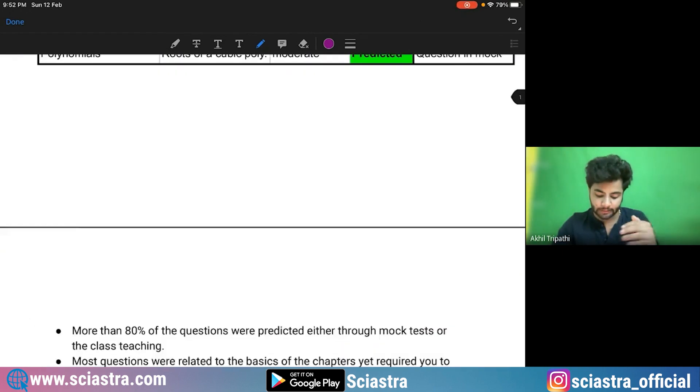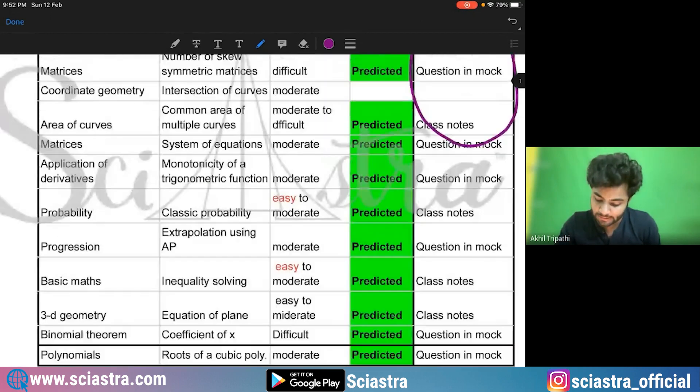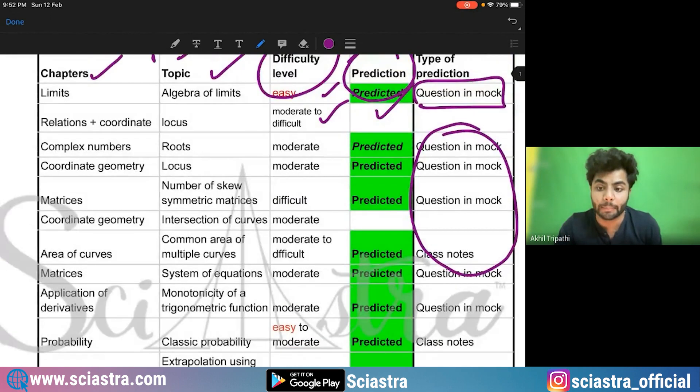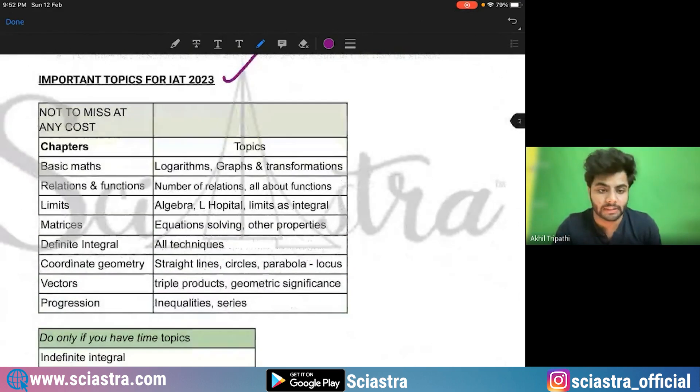Now, coming to the conclusion that how can you prepare now? So I hope you have seen the analysis of IAT 2022 paper mathematics section. If not, you can just go and check it out. Now in this, I will tell you what are the topics you should not miss at any cost. If you remember that last year, I made the predictions and see all of these questions were already predicted. So same way, I'm going to tell you the most important topics and chapters.